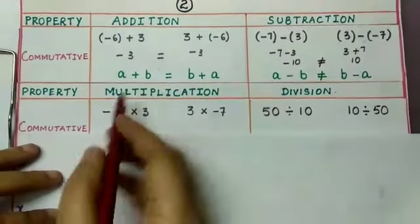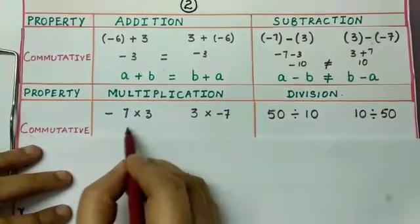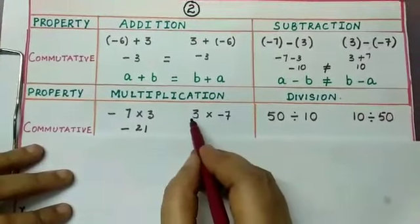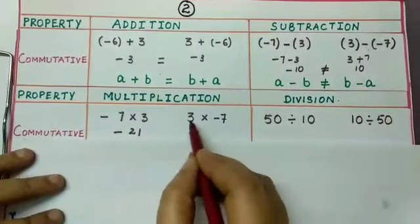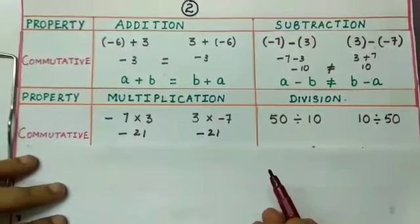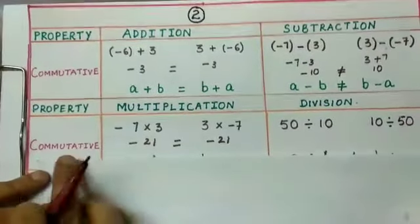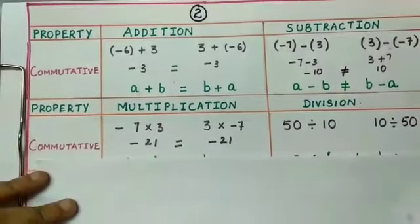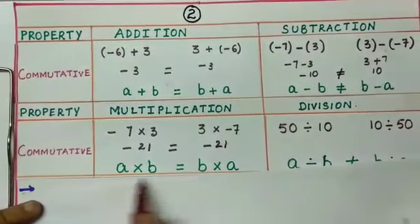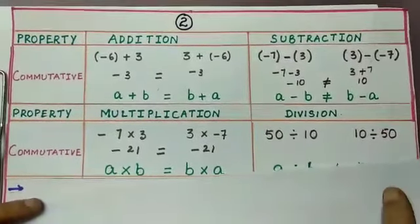Let us check commutativity under multiplication: minus 7 into 3 equals minus 21. Interchanging: 3 into minus 7 also equals minus 21. Since minus 21 equals minus 21, integers follow commutative property under multiplication. Generally, for any two integers a and b, a into b is equal to b into a.